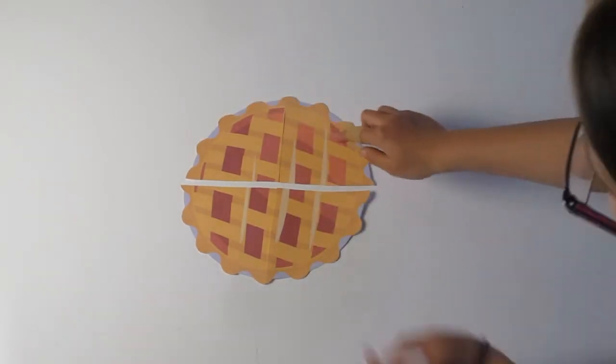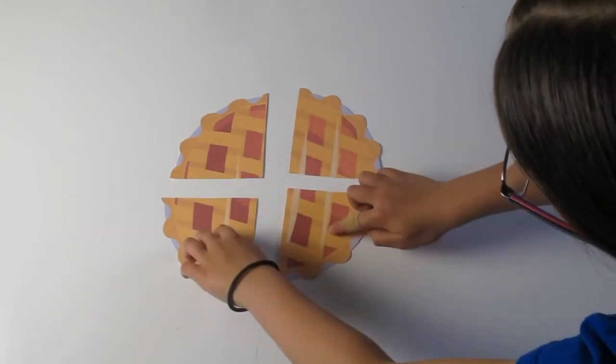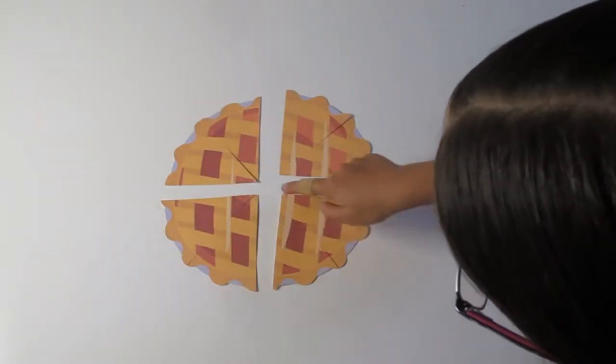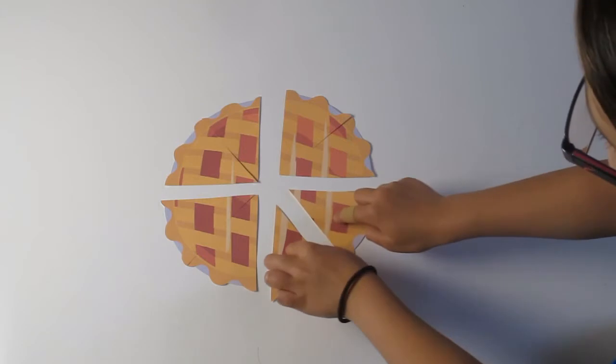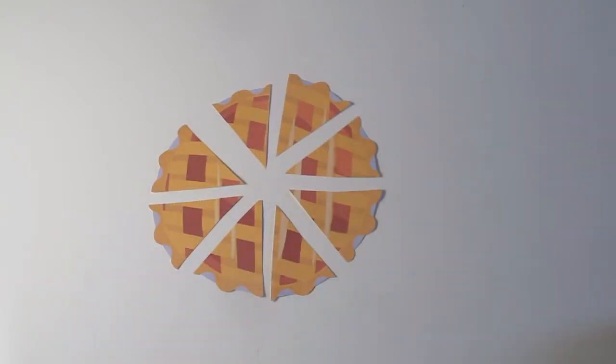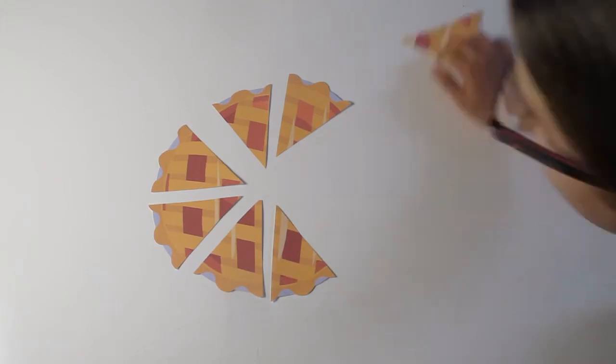But oh no! Four more people show up! So now I need to cut each large piece that I just cut into two smaller pieces, so that I can have a total of eight pieces, one for each person. A whole pie can be divided into eight equal pieces, just like a whole note can be divided into eight equal pieces called eighth notes.